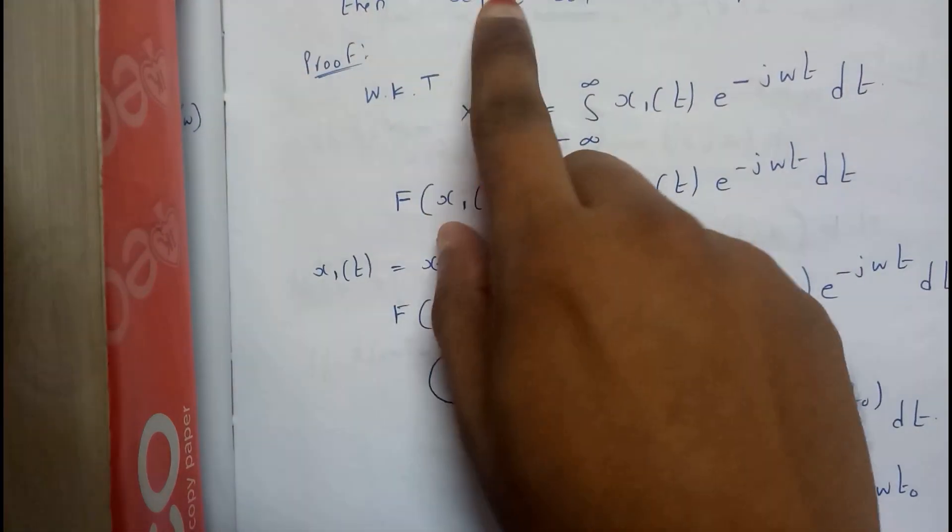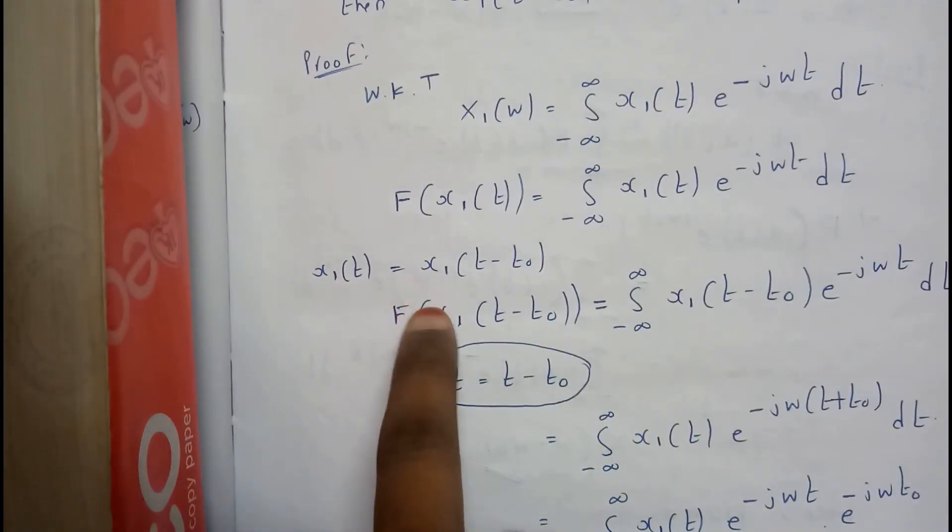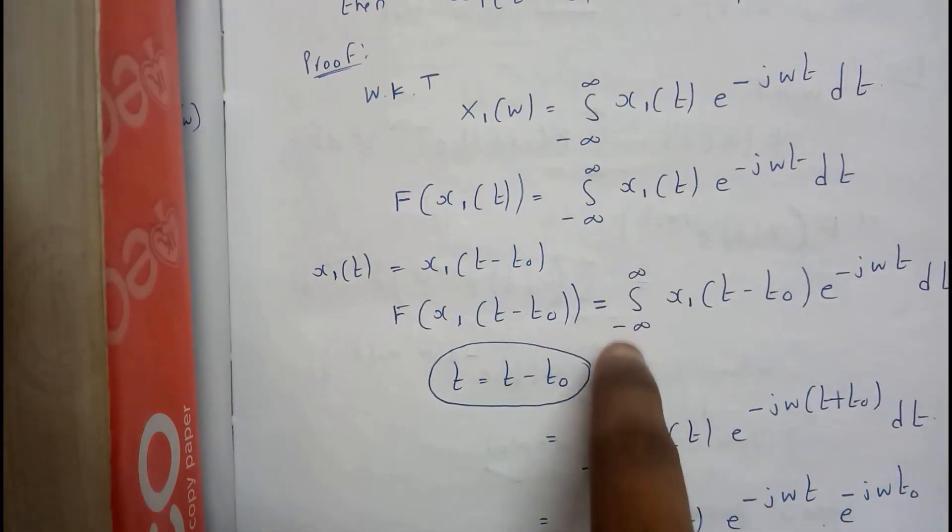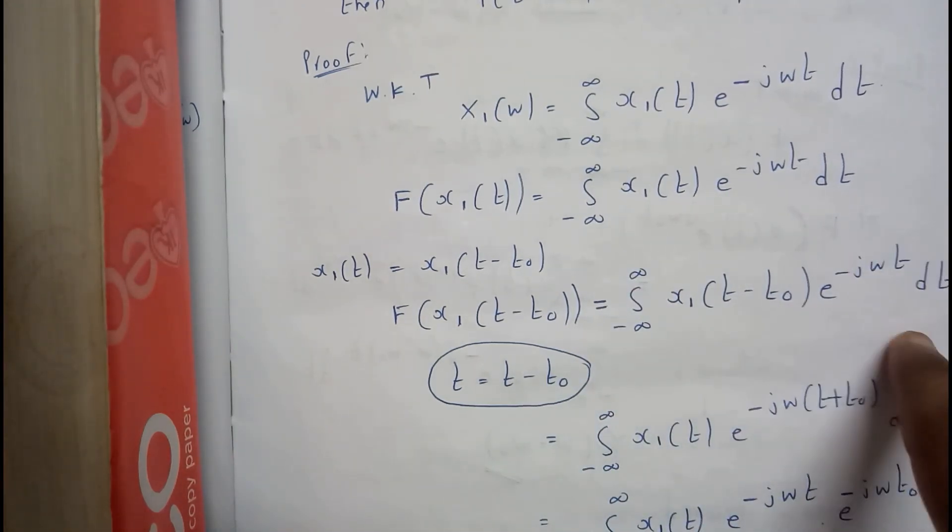So we will be assuming this whole part as x₁(t). So x₁(t) equals x₁(t - t₀). So Fourier transform of x₁(t - t₀) equals integral from minus infinity to infinity of x₁(t - t₀) e^(-jωt) dt.